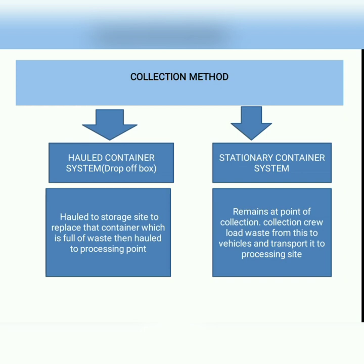There are two different types of collection strategies based on the containers used. One is the haul container system, or drop-off box, and another is the stationary container system. In the haul container system, the container is transported to the disposing site from the storage site, and once emptied it is returned back. In the stationary container system, the waste is directly transferred from the container to the vehicle at the storage site, and the vehicle then disposes the waste at the disposing site.